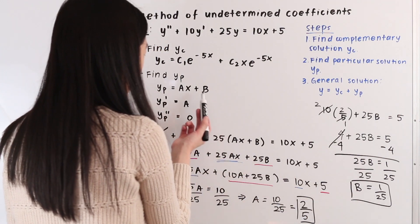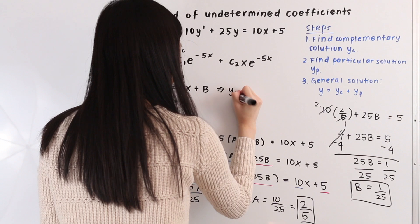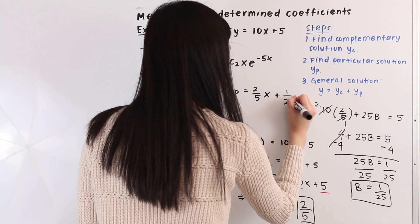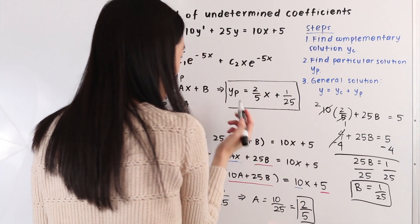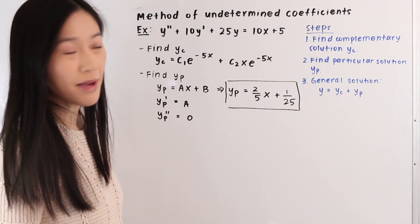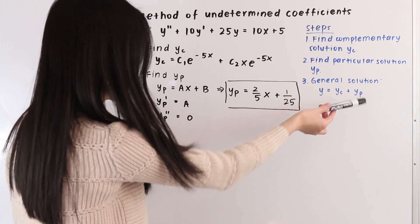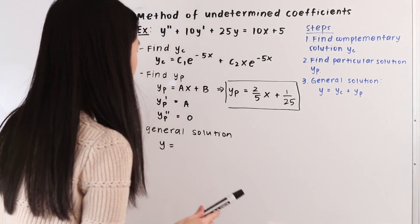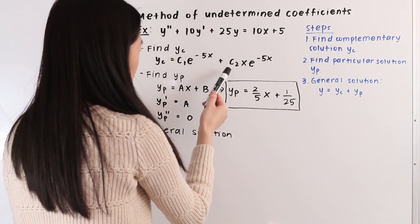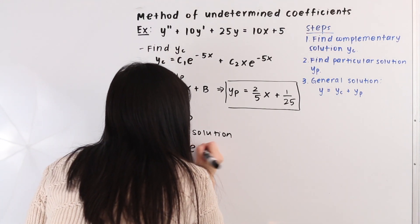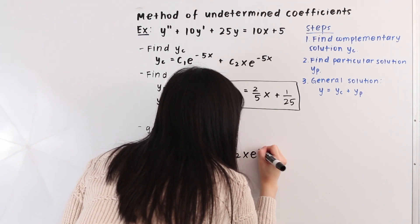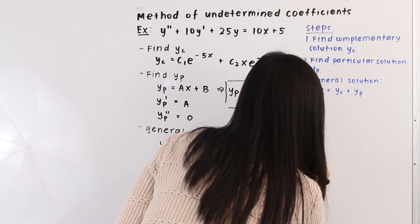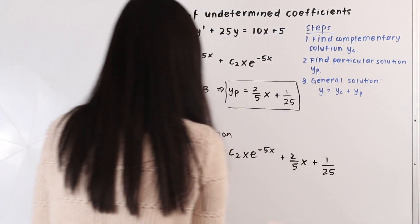Now that we have a and b, we plug back into our assumption: yp equals 2/5 x plus 1/25. This is our particular solution. For our last step, to obtain the general solution we add yc and yp together: y equals c1 e to the negative 5x plus c2 x e to the negative 5x plus 2/5 x plus 1/25. This is our general solution.